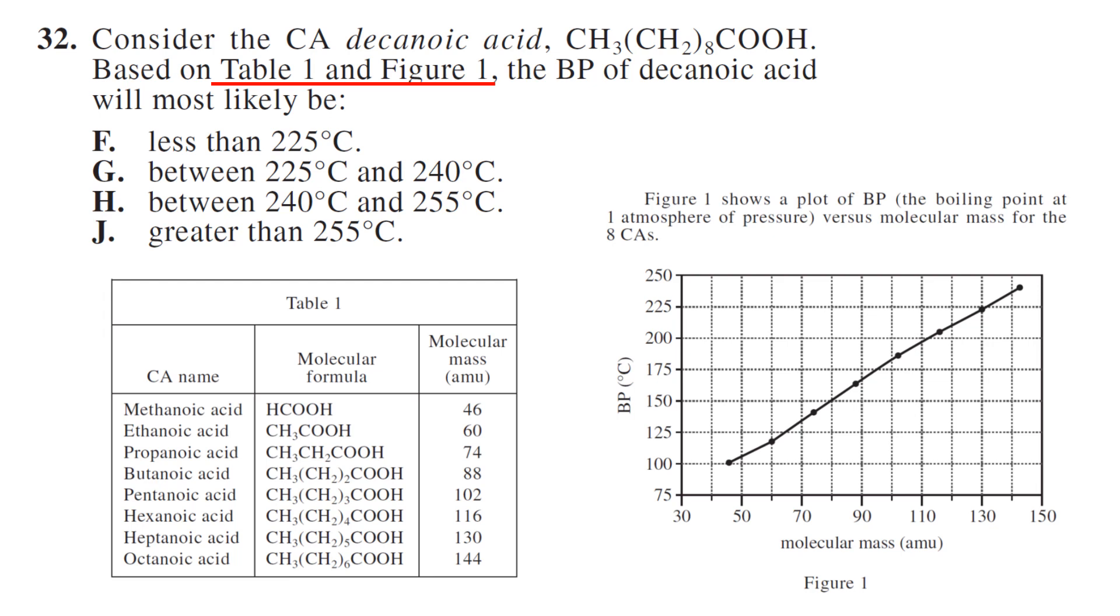Number 32, we're using table 1 and figure 1. And we have italicized words. Italicized words in a question is new information. You haven't seen it before. So consider decanoic acid based on figure 1, what would the boiling point most likely be? You can see the numbers all go up: 2, 3, 4, 5, 6, 8, which means decanoic acid is going to be the next one down.